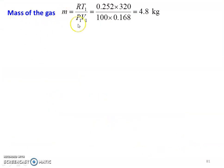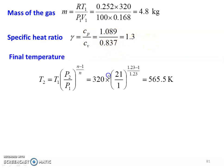Mass of the gas M equal to P1V1 divided by RT1, so 100 into 0.168 divided by 0.252 into 320 equal to 4.8 kilogram. Specific heat ratio gamma equal to CP by CV, 1.089 divided by 0.837 equal to 1.3. Final temperature T2 equal to T1 into P2 by P1 to the power N minus 1 by N, so 320 into 21 by 1 to the power 1.23 minus 1 divided by 1.23, calculating 565.5 Kelvin.